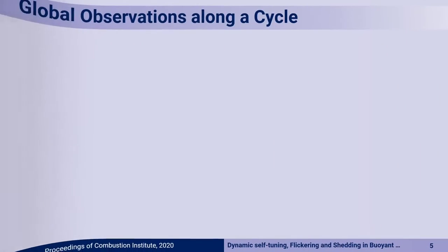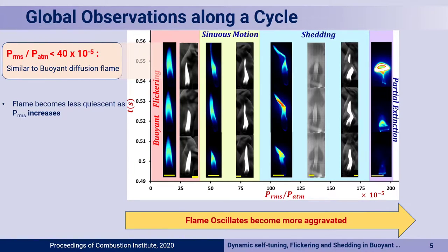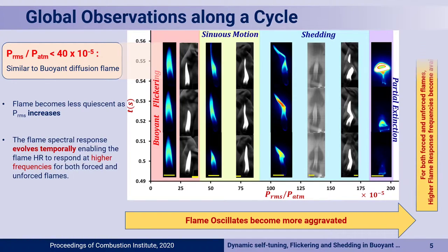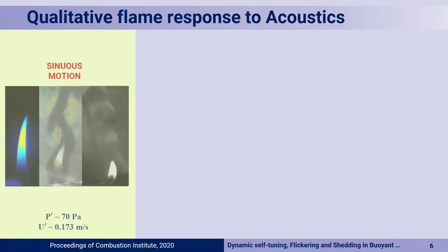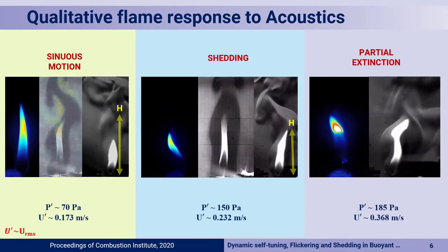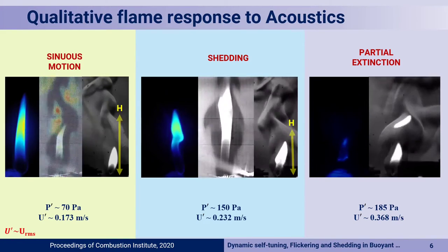Looking at the global observations of the flame: when you excite the flame using acoustics, the RMS pressure becomes very important. When you normalize the RMS pressure by the corresponding atmospheric pressure, you find that the flame becomes less and less cohesive as the RMS pressure increases — that means the flame becomes more and more violent. The flame spectral response also shows that for both forced and unforced flames, the flame response frequencies become higher and higher as the lifetime of the flame increases. The shedding height starts to come down with the increase of acoustic forcing. Qualitatively, as you increase the acoustics (P'), the flame transitions from a sinuous motion to a shedding motion to a partial extinction.